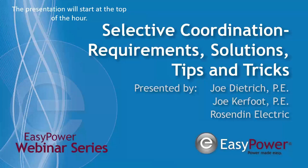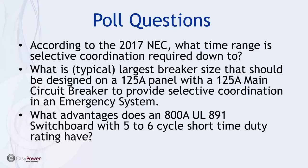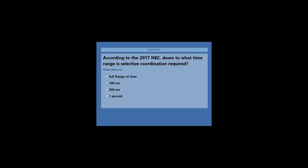As we are in the habit of doing, we'd like to start with a couple poll questions. Appreciate your participation. These may need a little bit of explanation, but the first question is, according to the 2017 National Electric Code, what time range is selective coordination required down to? Give it a shot, let's see how your results come in.